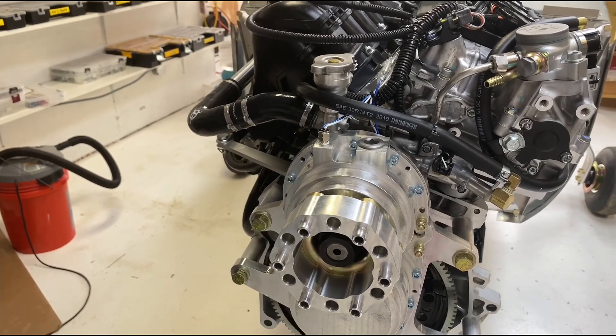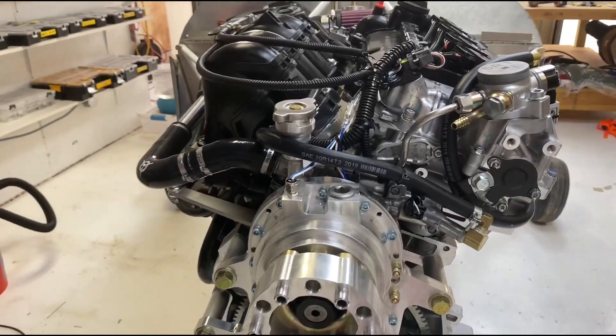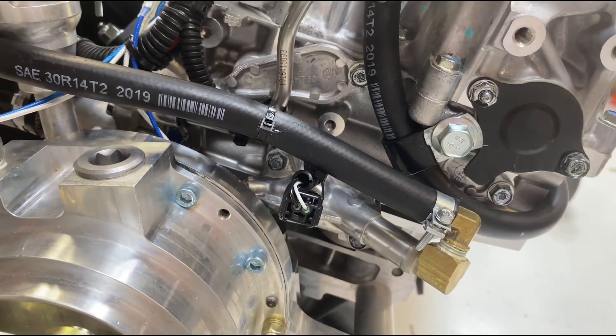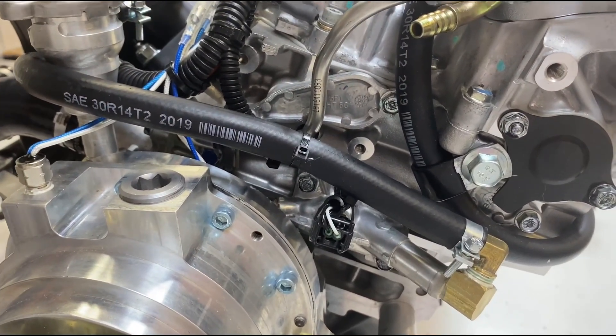And that's it for the Viking 130 heater installation. If you have a different Viking engine, it's very similar. It's just the locations of where you mount the hoses to the engine that might be slightly different.